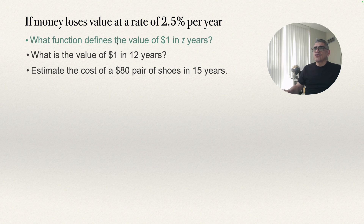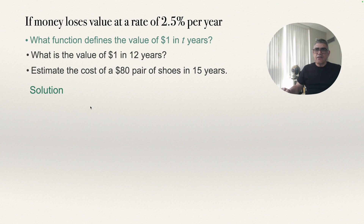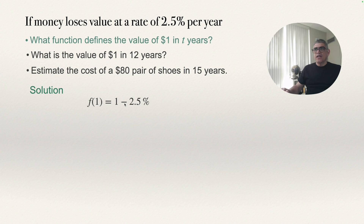What function defines the value of $1 in t years? Let's write the solution here below. Because we are going to be thinking in a function, let's call this function f. The first thing I'm going to think about is the function evaluated in one year. So f of 1 will be $1 — that is the value now — minus 2.5% of $1.